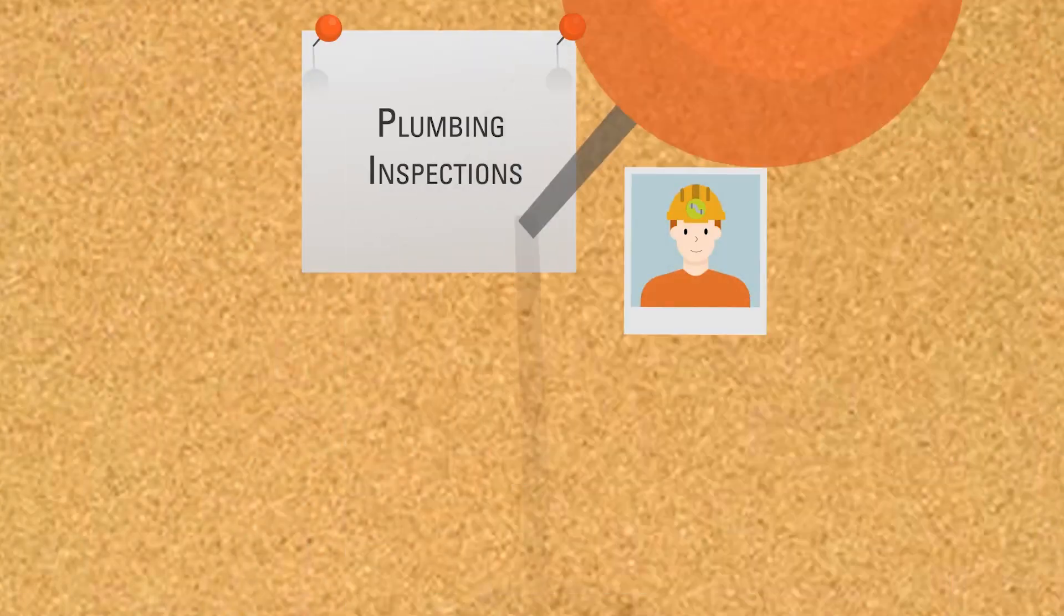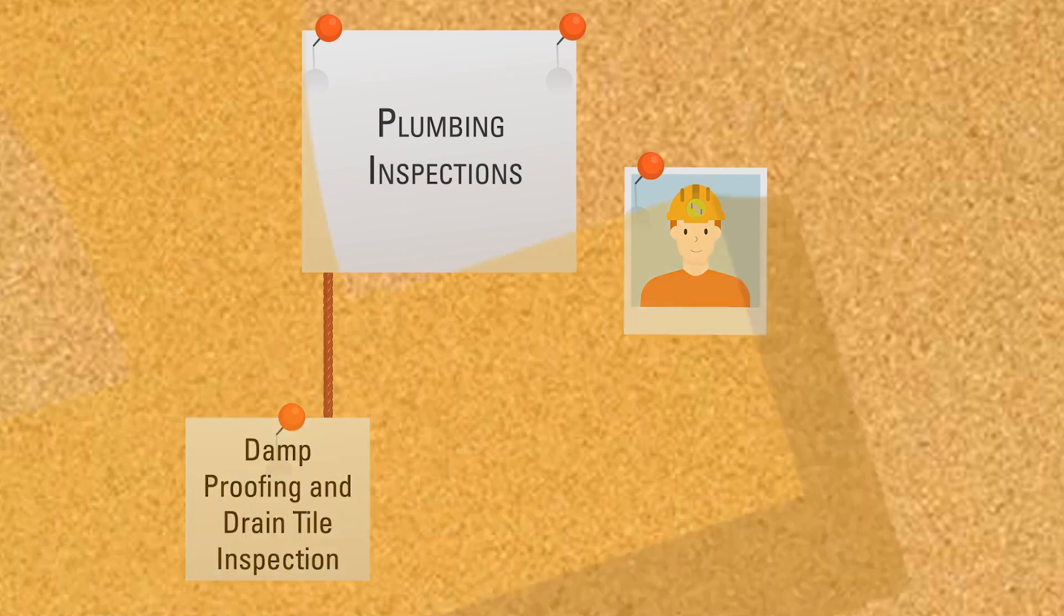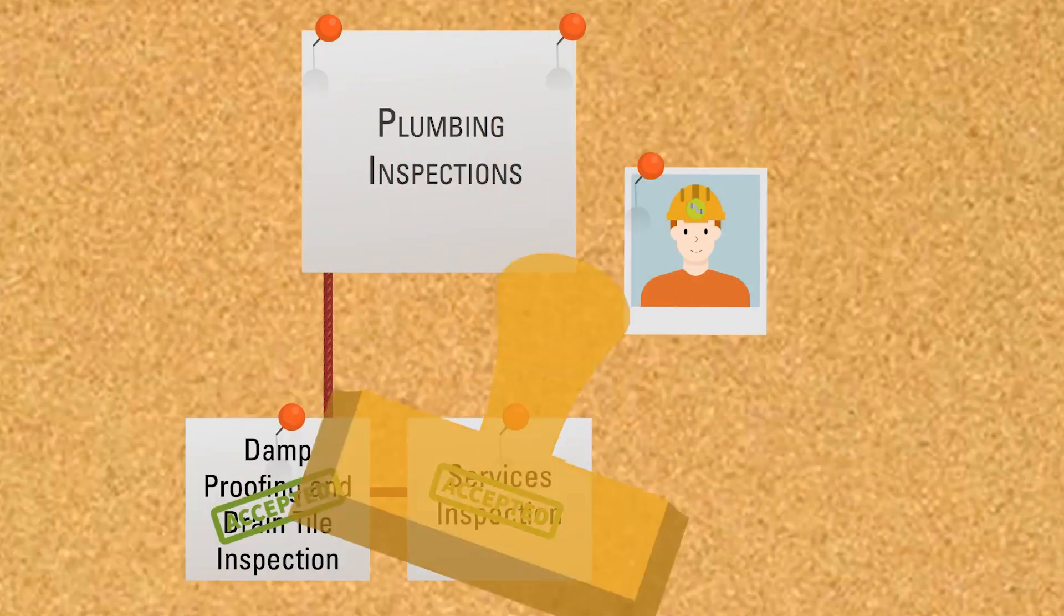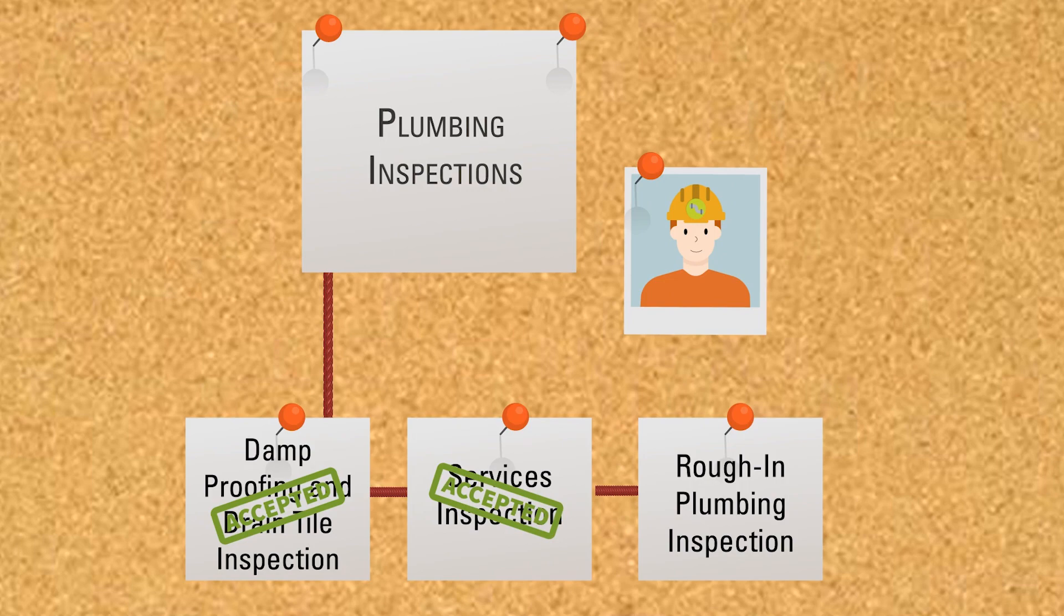Plumbing inspections start with the damp proofing and drain tile inspection, the services inspection, and the rough-in plumbing inspection.